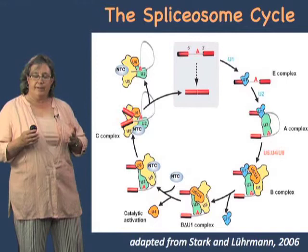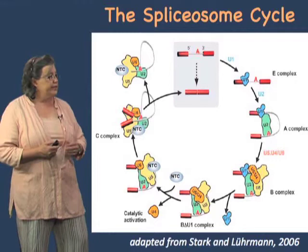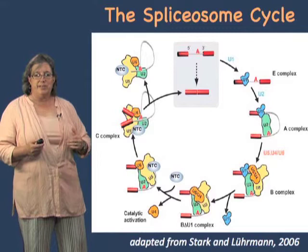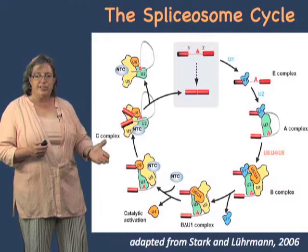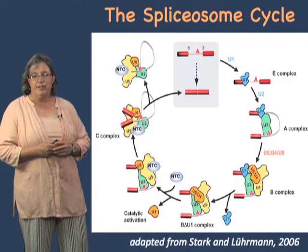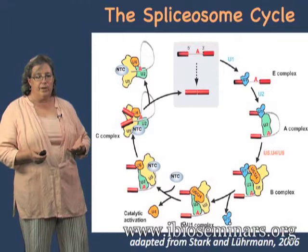In addition to structure for any biochemical complex or machine, you really need to know something about the dynamics. The splicing cycle is based on the complexes that are stable enough to be resolvable on a gel, or you can affinity purify them. But it doesn't tell you about the kinetics of things coming and going.